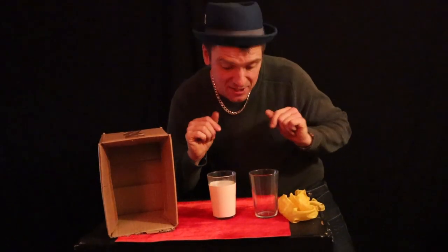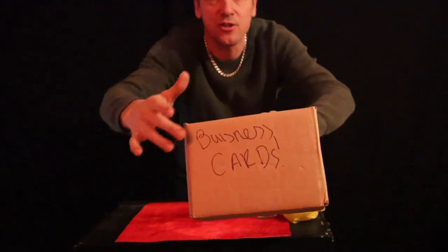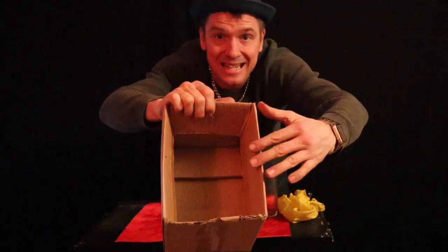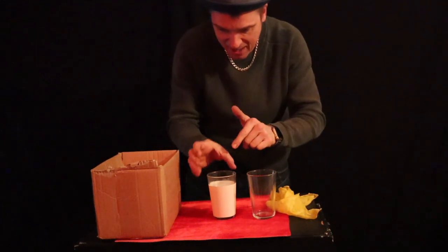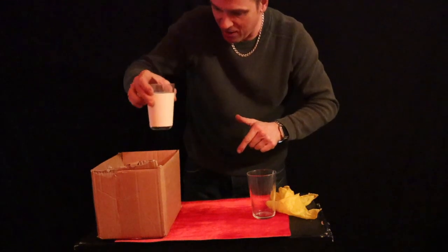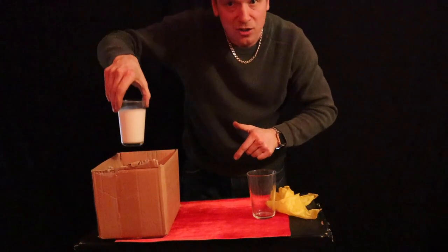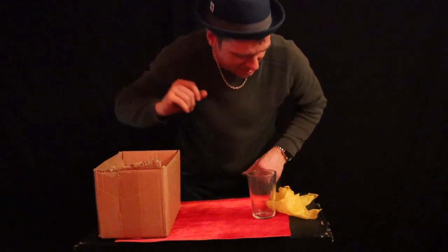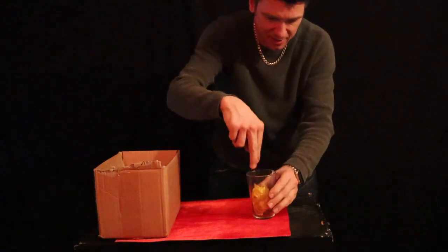Okay, for this little effect we have an empty box. As you can see I used it for my business cards; I'm now using it for this effect. You can see it's completely empty. I then have a piece of silk, an empty glass and a glass of milk. The glass of milk goes inside the box just like so — the glass of milk is actually going in there just in case you think I'm cheating. So I place it in here like so. I then take the silk and place the silk inside the glass.